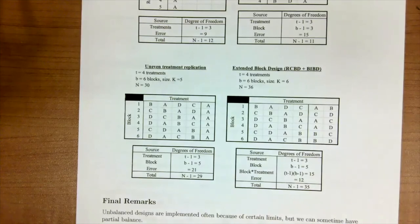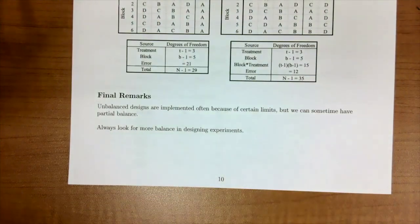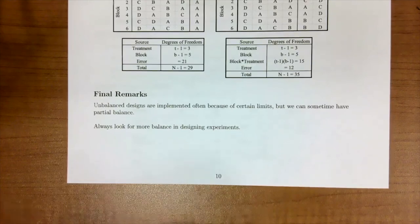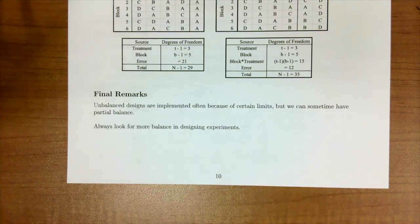My final remarks about unbalanced designs. Unbalanced designs are often implemented because of certain limitations. In the pillow example, we were at the limits of customers being patient enough to test three. One of my favorite balanced incomplete design examples is ice cream. We want to test 10 ice creams, but people's taste buds wear out after eating three. So there are always limitations we want to consider.